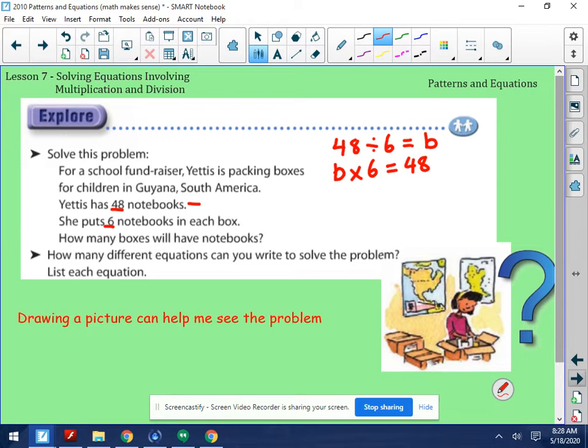Now, for many of you, you'll know 48 divided by 6 because you can do your multiplication facts. 48 divided by 6 is 8. So B would equal 8. We also know that 8 times 6 is 48. So there's an answer to our question. How many boxes will have notebooks? There'll be 8 boxes. B has to equal 8.